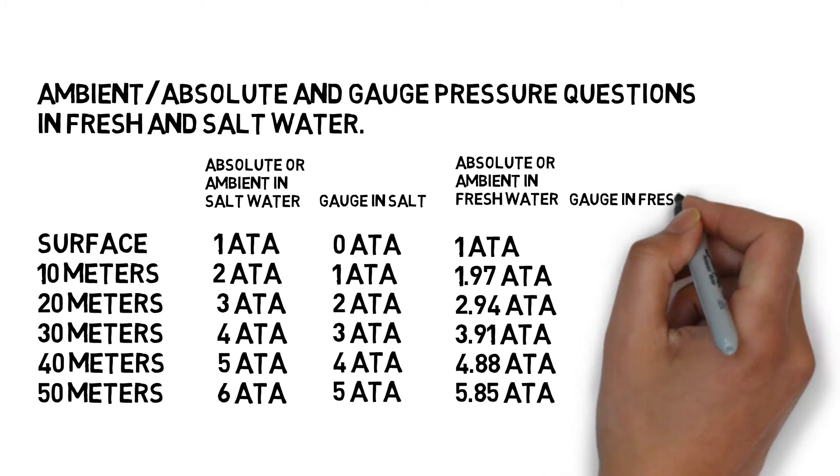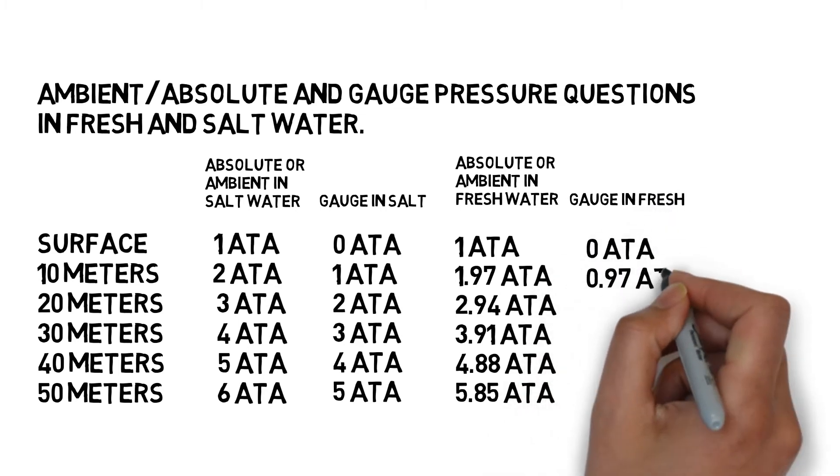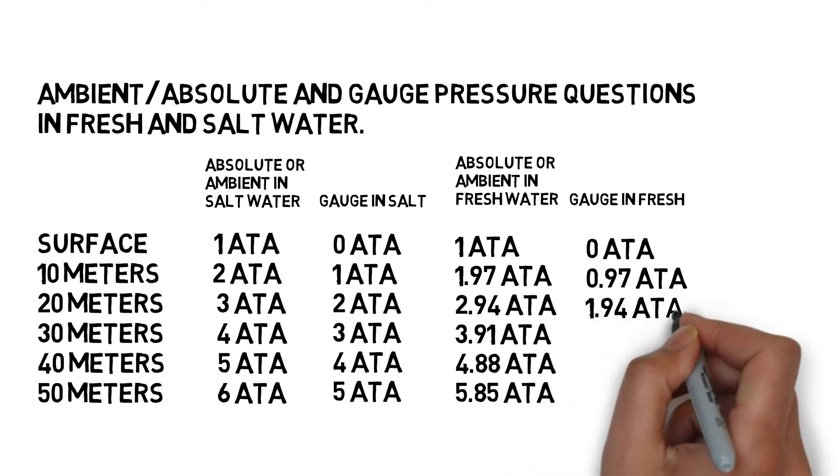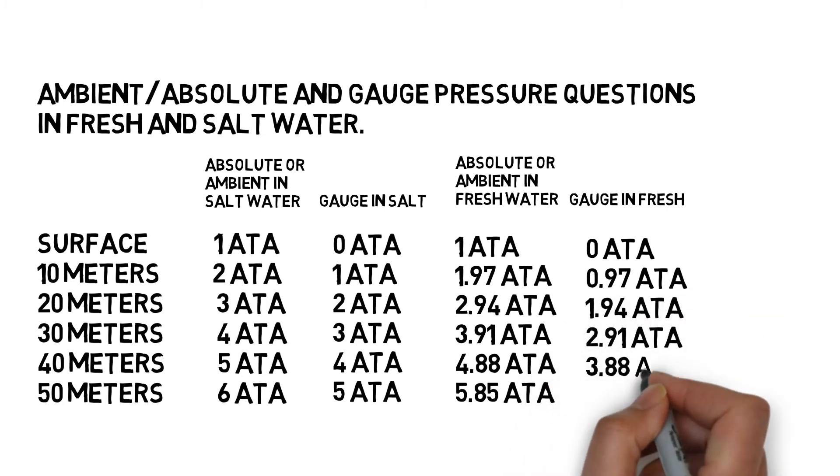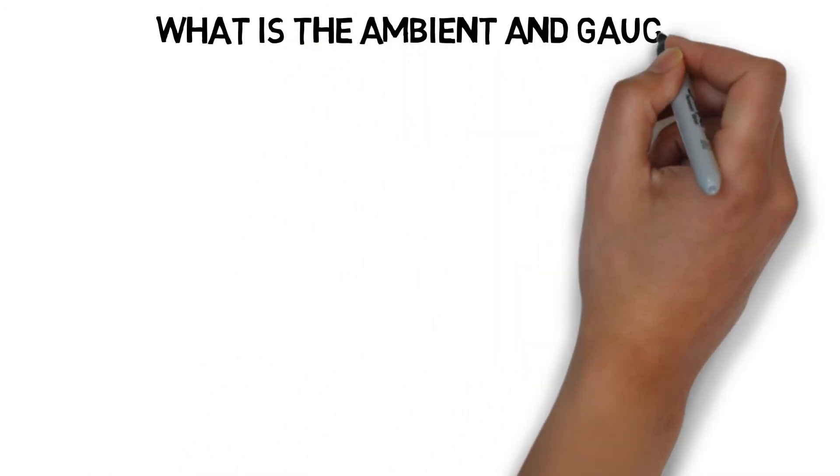Well, the one represents the ambient pressure from the atmosphere above us, and that doesn't change whatever type of water we're in. So then the final step to find the gauge pressure in fresh water is to subtract one from the ambient pressure in fresh water. And that is how we find these different pressures in these different types of water.